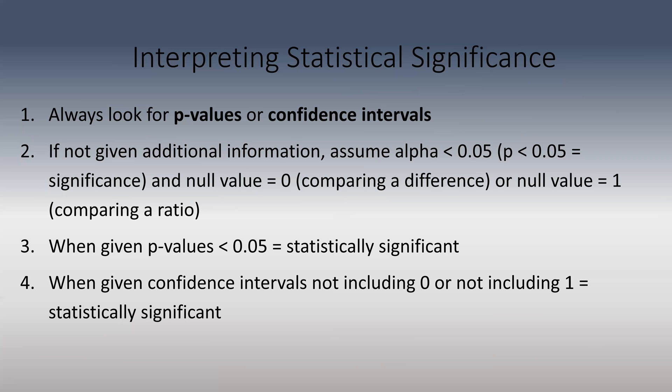The actual estimate itself may look dramatically large — for example, asthma exacerbations were greatly decreased — but if the p-value is not less than 0.05, or less than whatever threshold they specify in the question, that's not statistical significance. They use impressive-looking values to trick you. Always use p-values and confidence intervals to determine statistical significance.